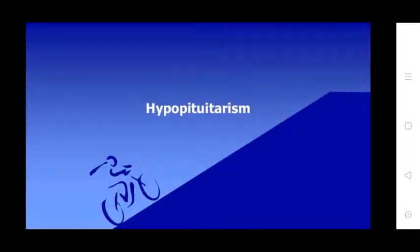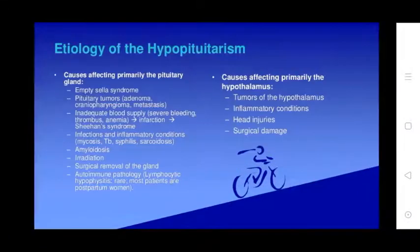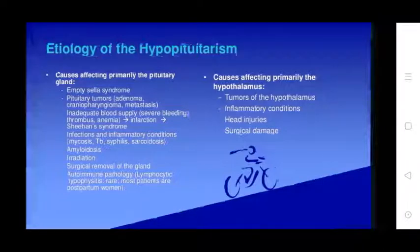Hypopituitarism may involve loss of one hormone or often all hormones of the adenohypophysis. Panhypopituitarism indicates loss of most or all adenohypophyseal hormones. Causes affecting the primary pituitary gland include empty sella syndrome, pituitary tumors, inadequate blood supply, infections, inflammatory conditions, amyloidosis, irradiation, surgical removal, and autoimmune pathology.